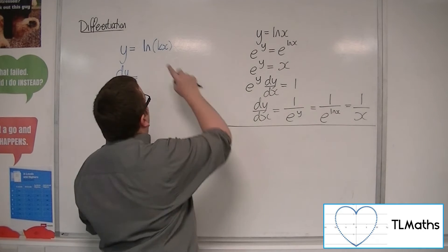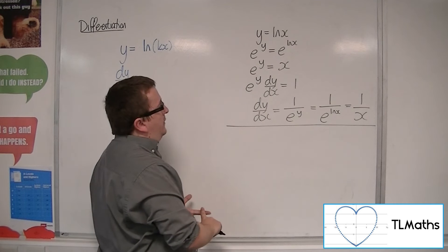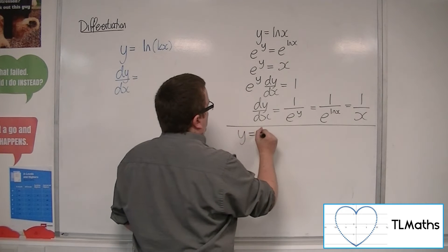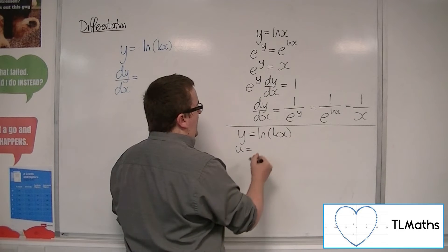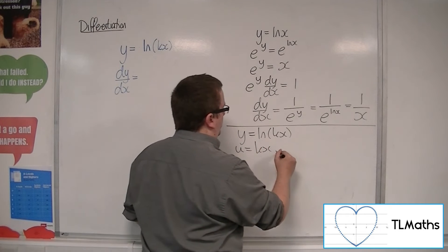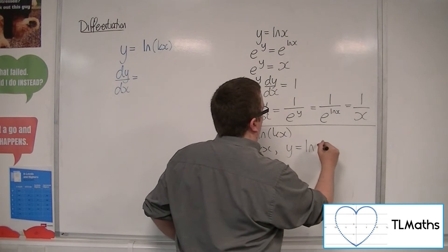Now, in order to differentiate that, I'm going to use the chain rule again. So if I let u be kx, then y is going to be ln of u.